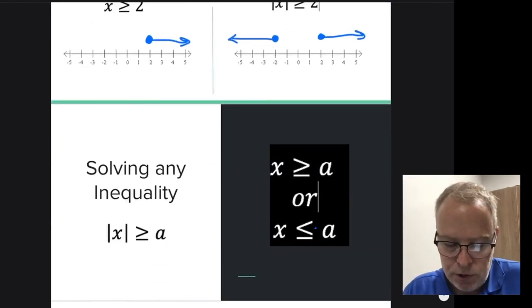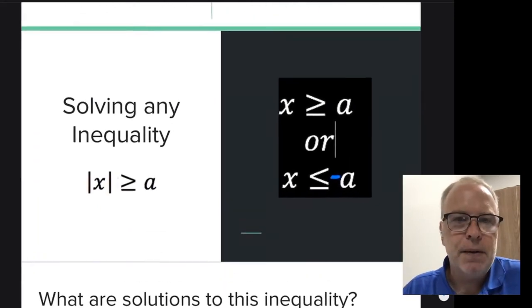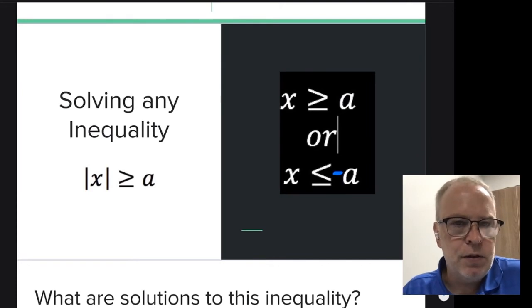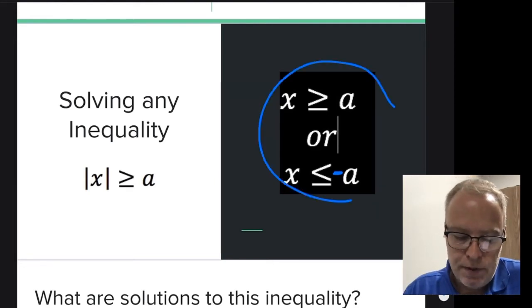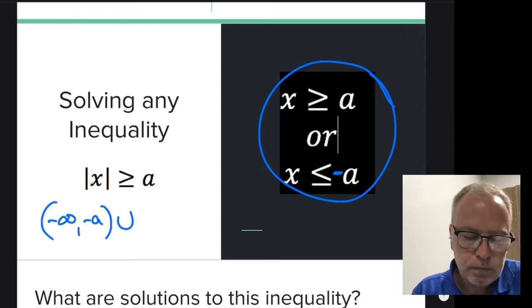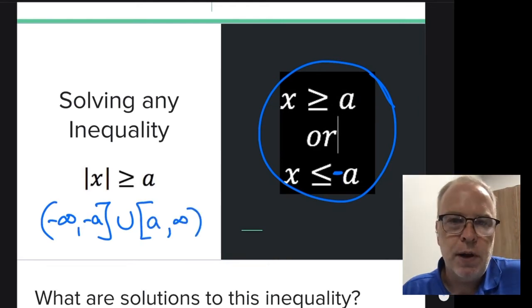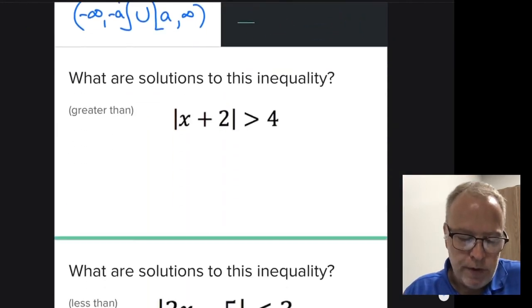And I actually have a typo here. This should have a minus sign here. So make sure you fix your notes if you're following along with your packet. So solving any inequality, the absolute value of x is greater than or equal to a, you're going to have this statement. Or let's go ahead and write it negative infinity all the way up to negative a union, actually I should put a bracket there because this is a closed circle problem, a to infinity. So that's another way to write it with interval notation.